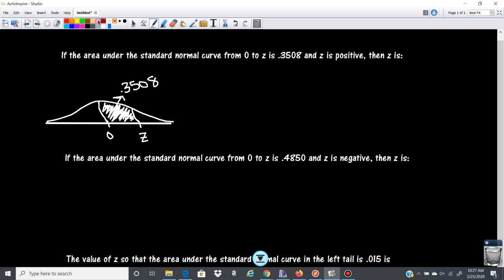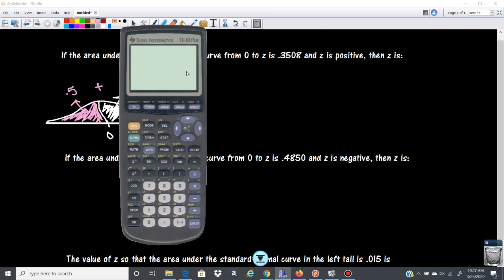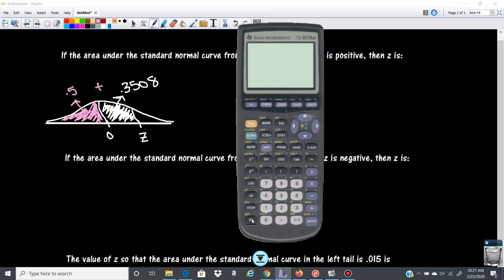So the rest of this area that's missing here is 0.5 because half of the curve to the left is 0.5 and half of the curve to the right is 0.5, okay, from one side of the mean to the other. So if I add these two together, I'm going to get the area under this curve.